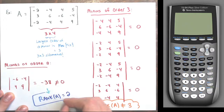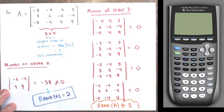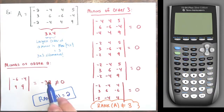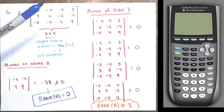The largest order of any non-zero minor is two — wonderful. That's exactly what I had in the last video when I looked at this same matrix, where putting it in row echelon form and counting pivot columns told us how many linearly independent columns or rows you have in this matrix. There are two of them.